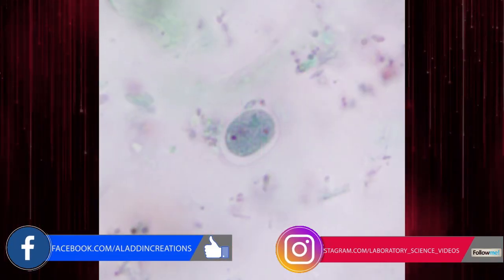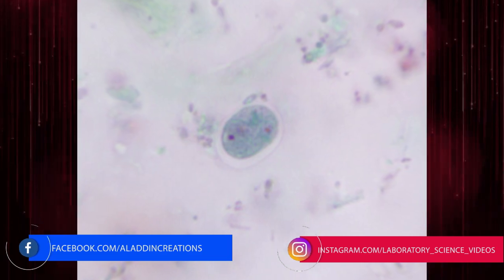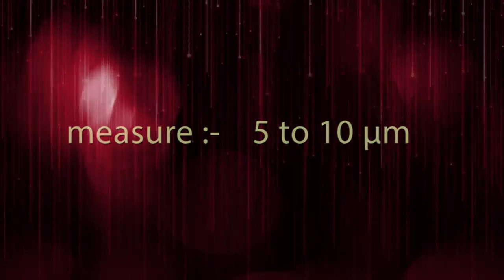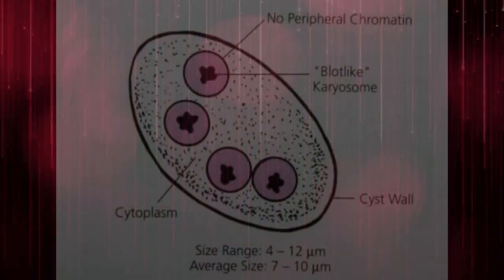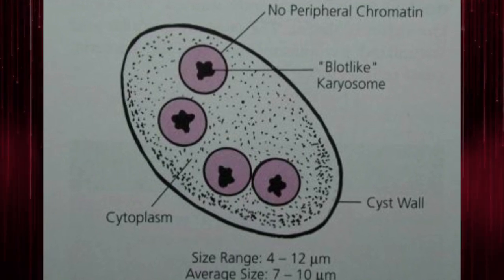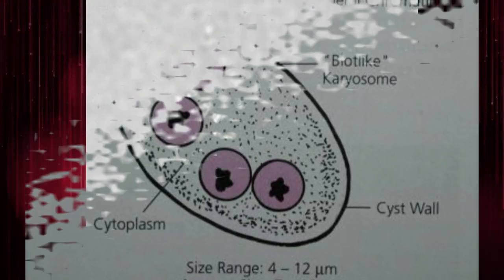Cysts of Endolimax nana are spherical to ellipsoidal in shape and measure 5 to 10 micrometers. Mature cysts possess 4 nuclei with large karyosomes and no peripheral chromatin.